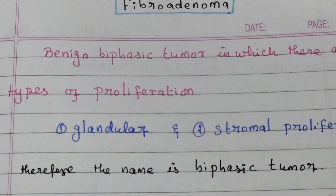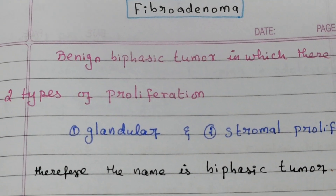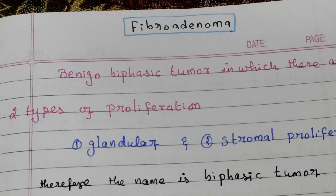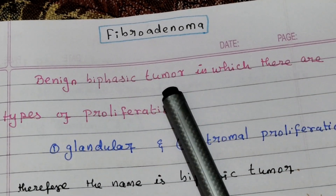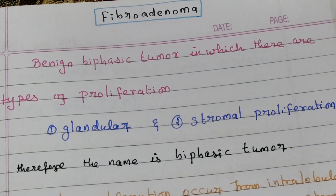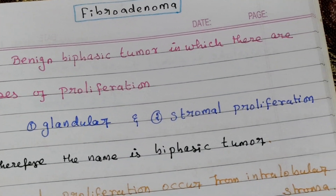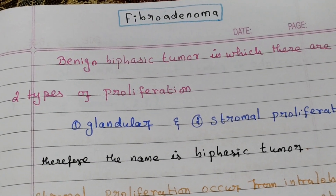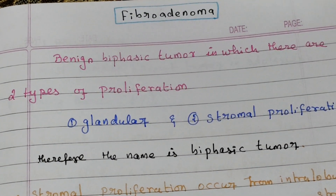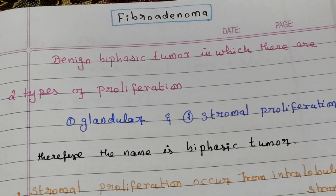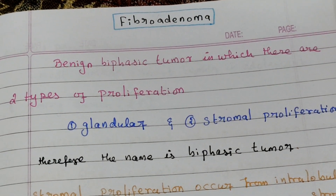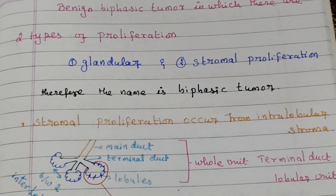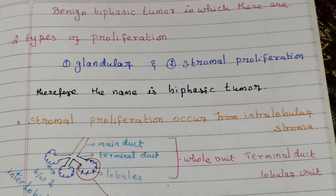Today's topic of discussion is fibroadenoma. Fibroadenoma is a benign biphasic tumor. There are two types of proliferation: glandular proliferation as well as stromal proliferation. Therefore the name is biphasic tumor, and this stromal proliferation occurs from the intralobular stroma.